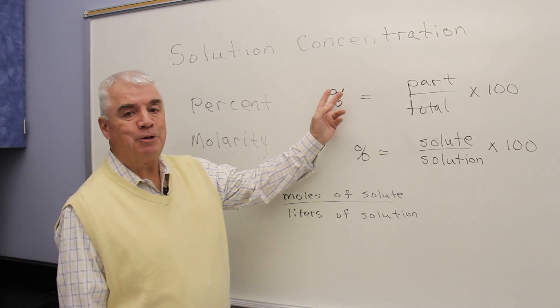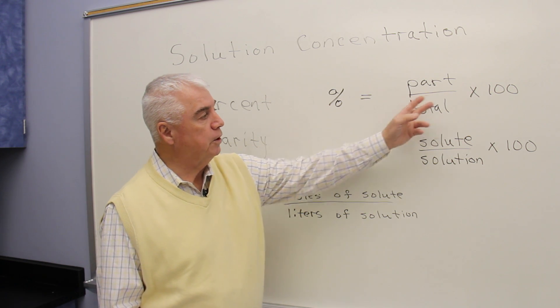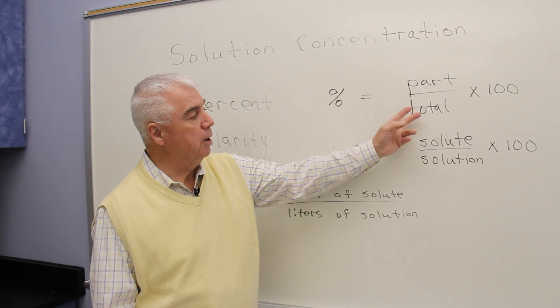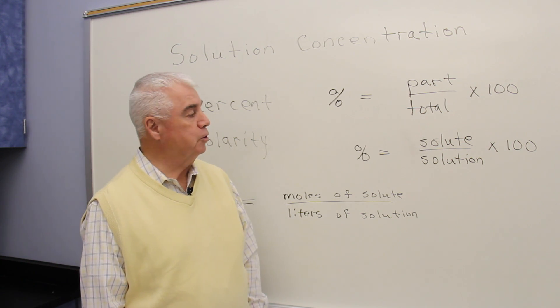Just in general terms, percent is equal to the part over the total times 100. Usually this is a smaller number, the total is the larger number.